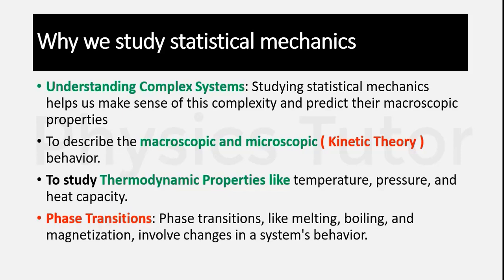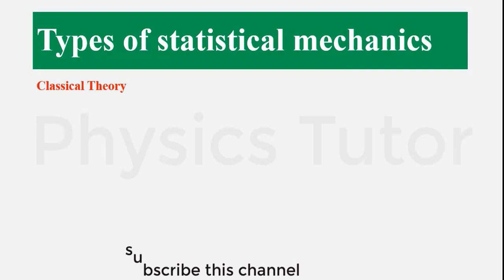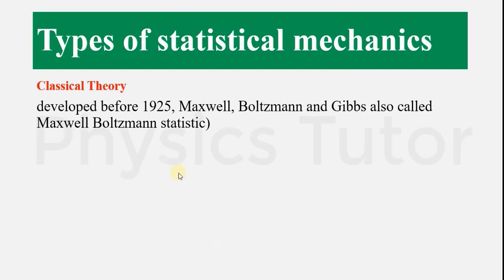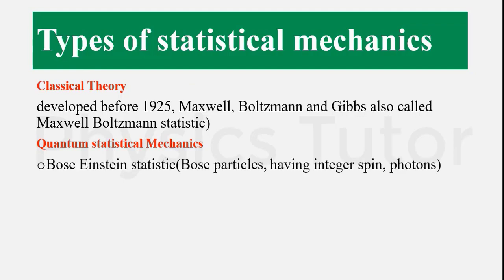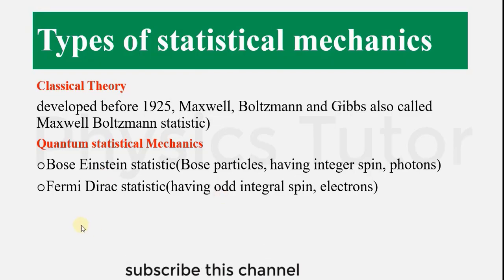There are two types of statistical mechanics. First, classical statistical mechanics, based on thermodynamics developed by Maxwell, Boltzmann, and Gibbs — known as Maxwell-Boltzmann statistics. Second, quantum statistical mechanics, which includes Bose-Einstein statistics, describing Bose particles having integral spin and photons, and Fermi-Dirac statistics, which describes particles with odd half-integral spin such as electrons, which have spin motion and orbital motion in an orbital.